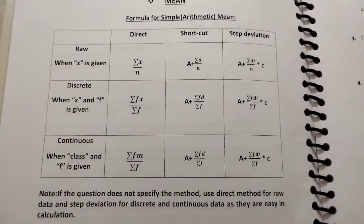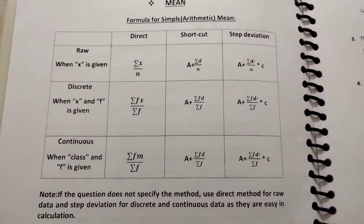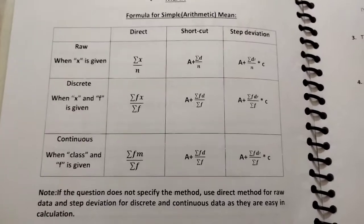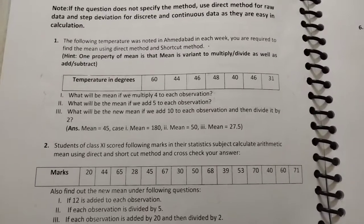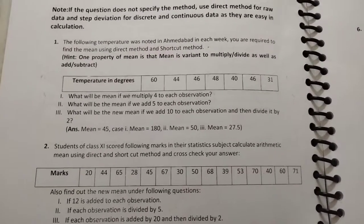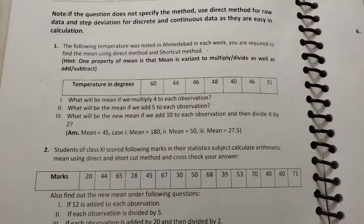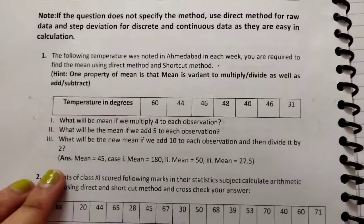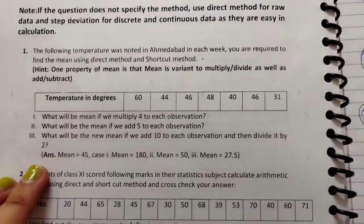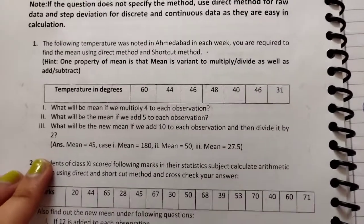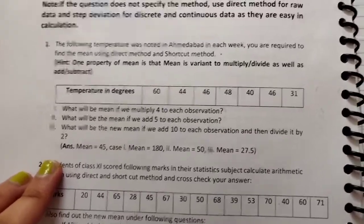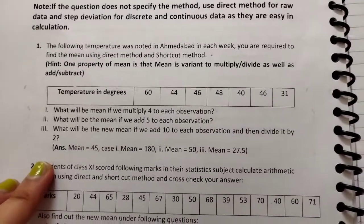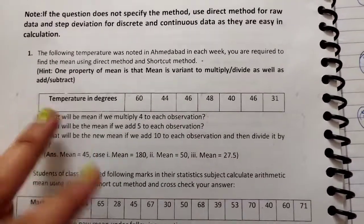For discrete series and continuous series, you apply these formulas the same as given in the table. Now let us solve some questions so you can get a clear picture of how to solve the questions and find the mean. The first question gives temperature noted in Ahmedabad each week, and we are required to find the mean using the direct method and shortcut method.